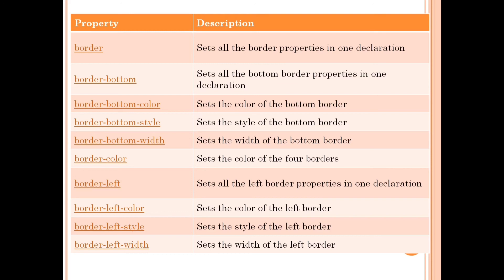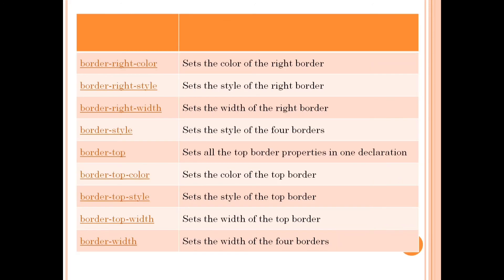Border-left sets all left border properties in one declaration. Border-left-color sets the color of the left border. Border-left-style sets the style of the left border. Border-left-width sets the width of the left border. Similarly, border-right-color, border-right-style, and border-right-width cover the right border. Border-style sets the style for all four borders. Border-top sets all top border properties. Border-top-color, border-top-style, and border-top-width set the color, style, and width of the top border respectively. Border-width sets the width of all four borders.